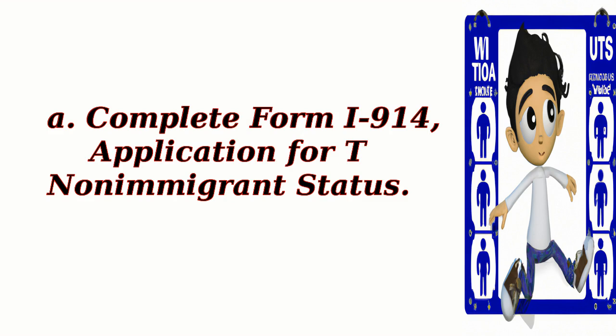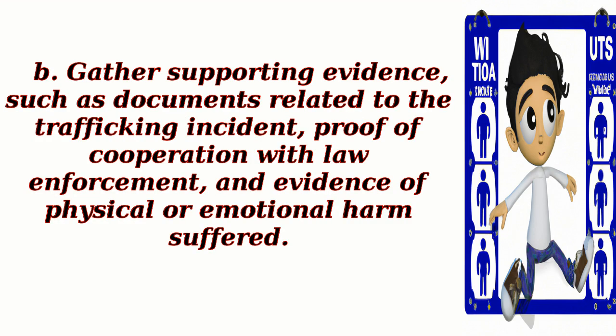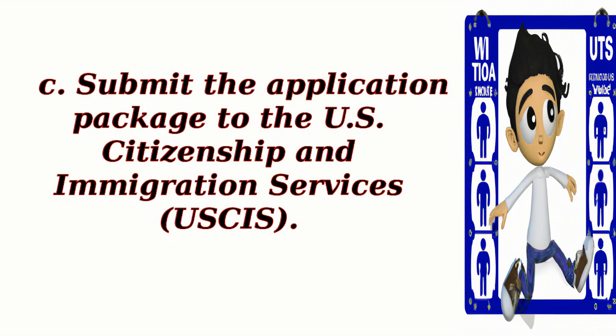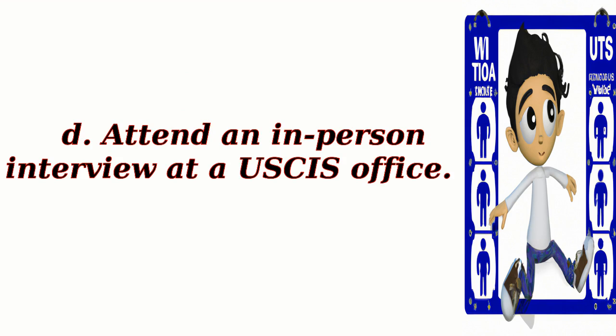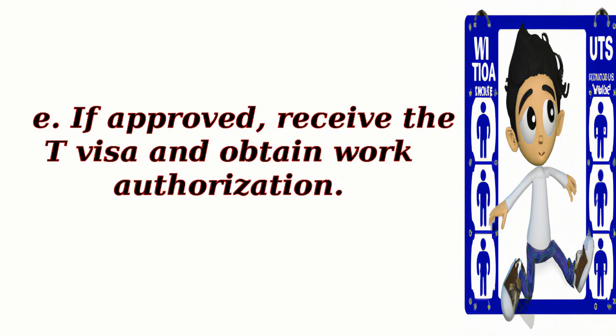A. Complete Form I-914, Application for T-Non-Immigrant Status. B. Gather supporting evidence, such as documents related to the trafficking incident, proof of cooperation with law enforcement, and evidence of physical or emotional harm suffered. C. Submit the application package to the U.S. Citizenship and Immigration Services (USCIS). D. Attend an in-person interview at a USCIS office. E. If approved, receive the T-Visa and obtain work authorization.